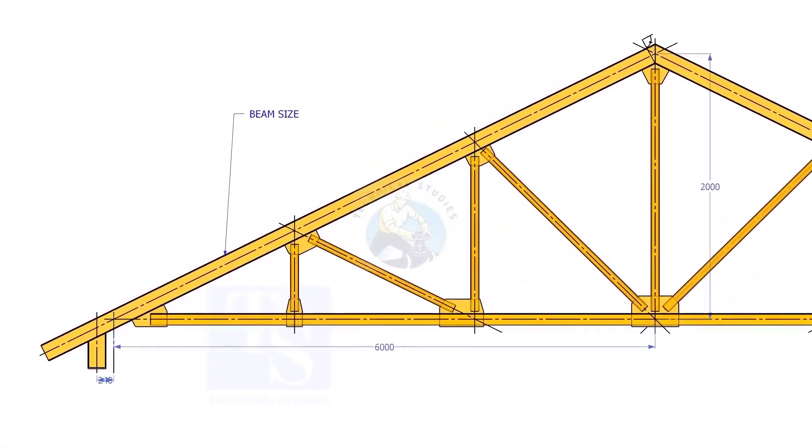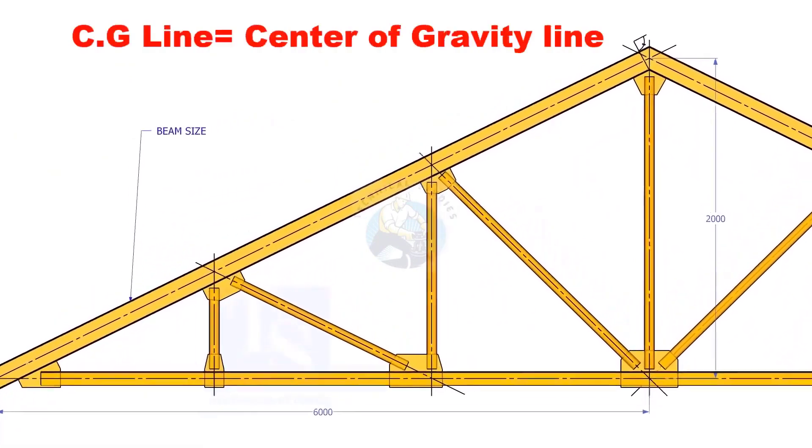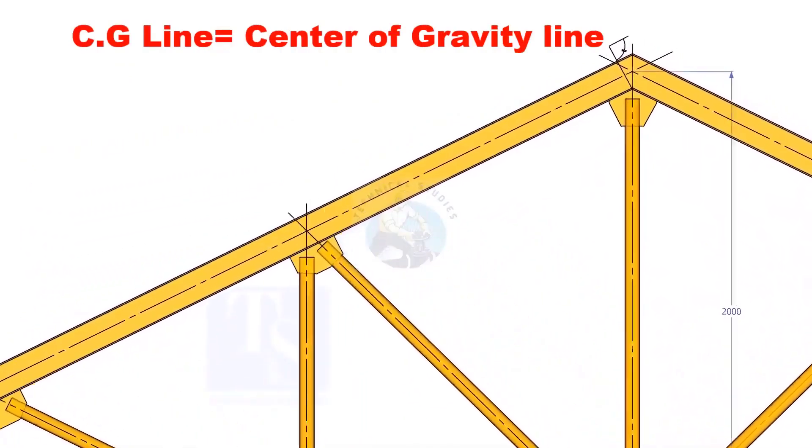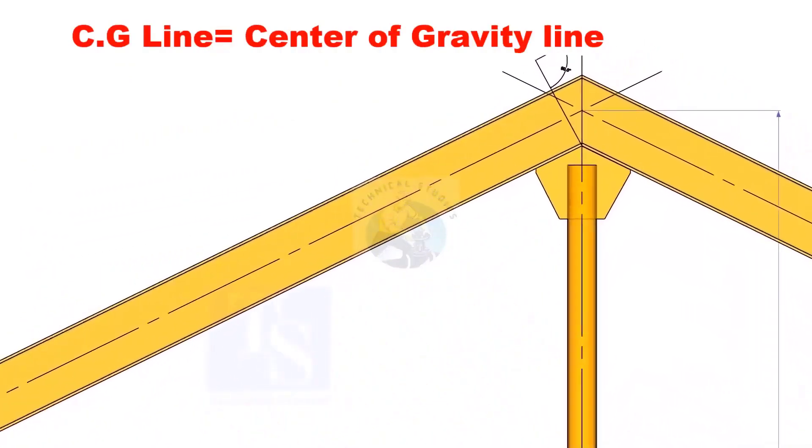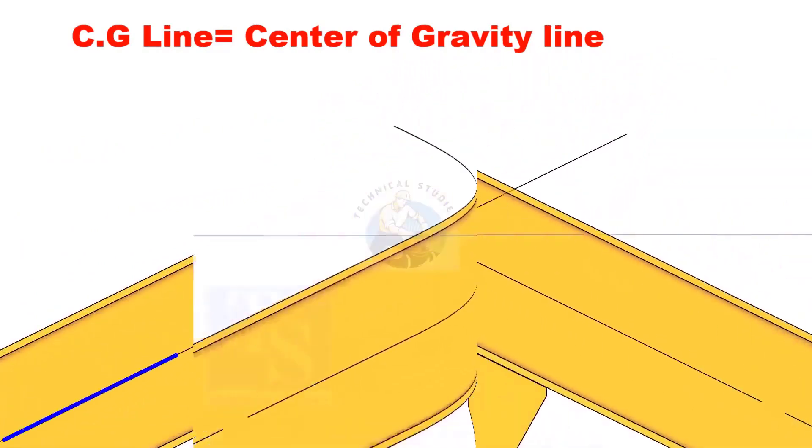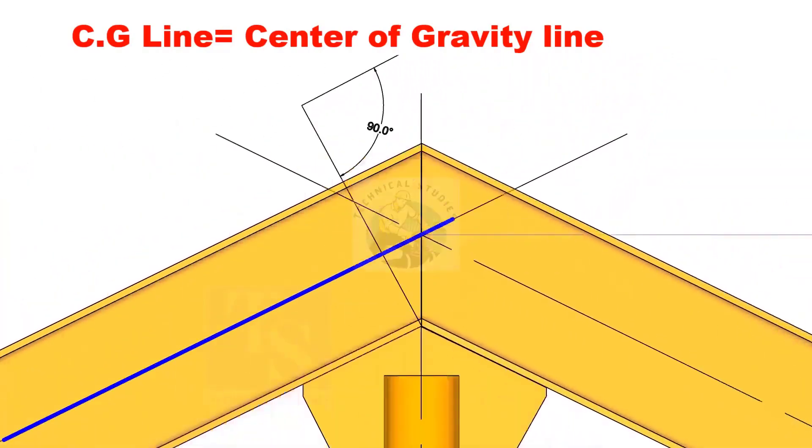In the drawing, usually, the span and the height through the CG line of a truss are given. Remember that the CG line doesn't pass through the center of all the objects. It depends on the shape and cross section of an object.